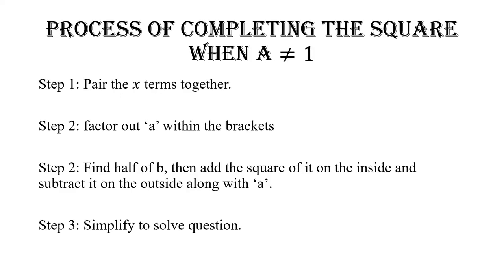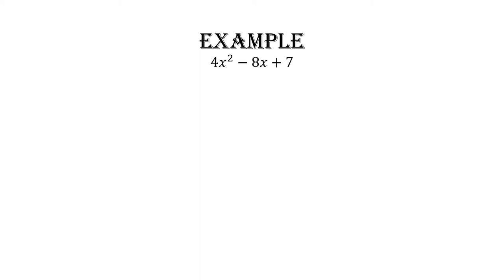Here is the process — just like yesterday — but notice there is one additional step. Step 2 wasn't there yesterday because we did not have a coefficient 'a'. Now that a is not equal to one, we're going to factor out 'a' within the brackets. The first thing we do is still pair the x terms.